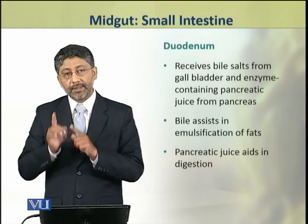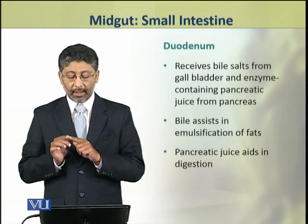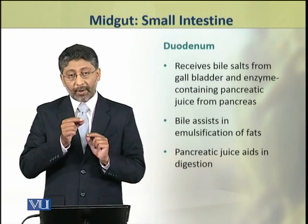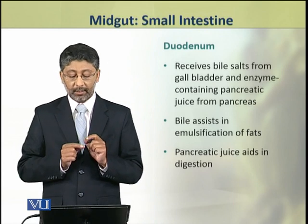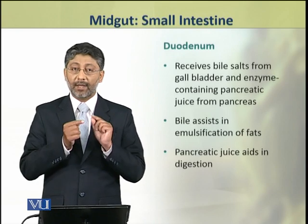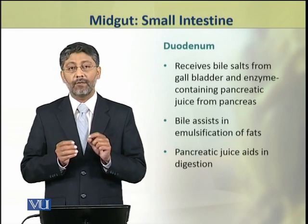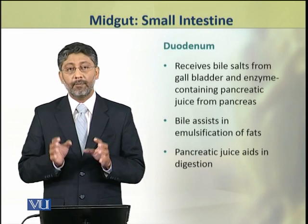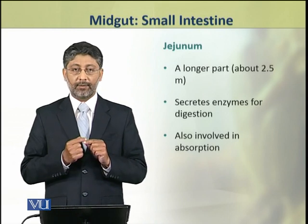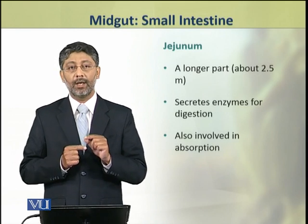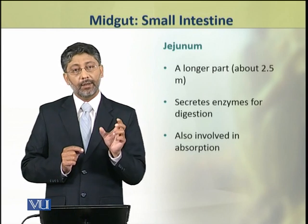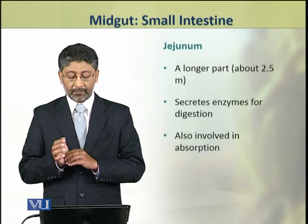In addition to that, the duodenum receives bile salts from the gallbladder and pancreatic juice from the pancreas, which assist in the emulsification of fats and aid in the digestion of all major components of food.